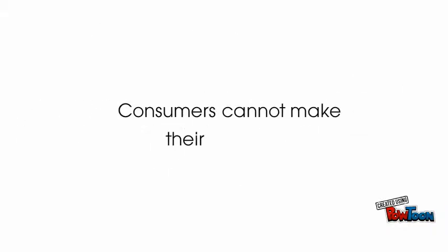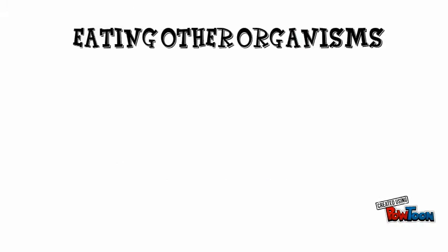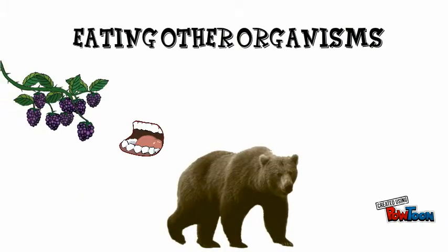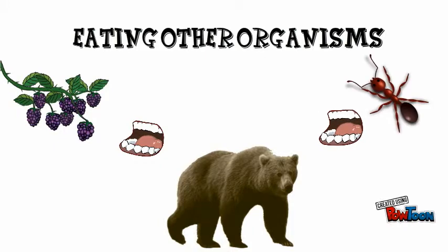Consumers are herbivores, carnivores and omnivores and cannot make their own food. Consumers obtain their energy by eating other organisms, such as this bear eating berries and ants for its energy.